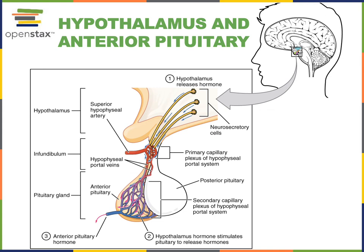Another example is the hypothalamic-pituitary-adrenal axis, where the hypothalamus makes corticotropin-releasing hormone (CRH), the anterior pituitary makes adrenocorticotropic hormone (ACTH), and the cortex of the adrenal gland produces glucocorticoid hormones to help the body respond to chronic stress. The HPG axis is another example, where the hypothalamus makes gonadotropin-releasing hormone (GnRH) to stimulate the anterior pituitary to make luteinizing hormone (LH) and follicle-stimulating hormone (FSH), which travel through the blood to the gonads — the testes and ovaries — stimulating production of the sex hormones testosterone, estrogen, and progesterone.